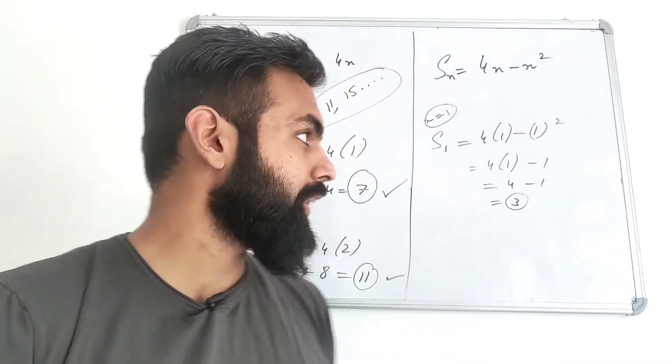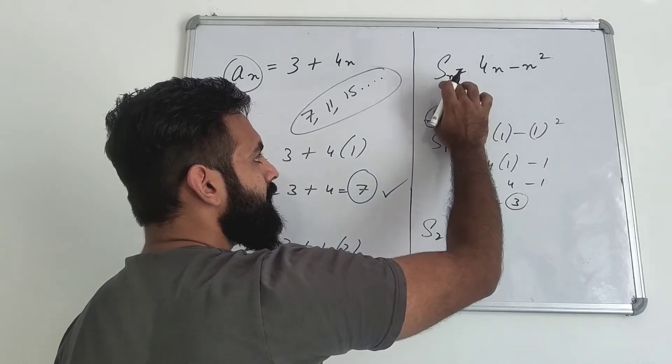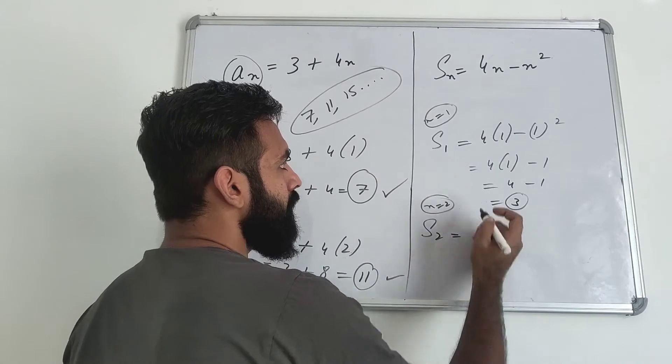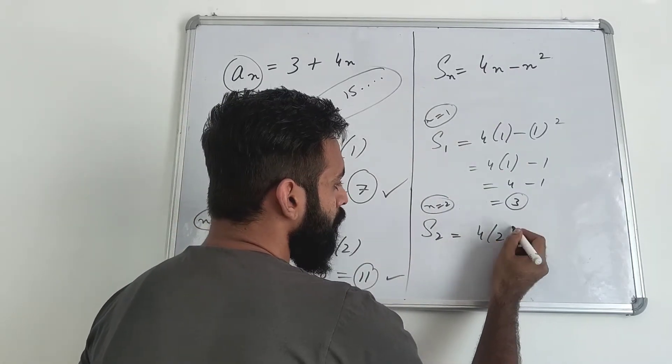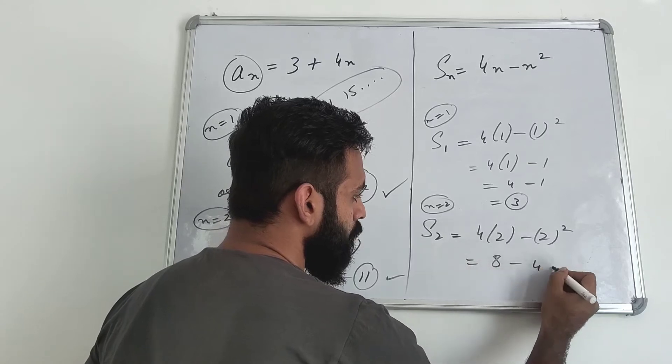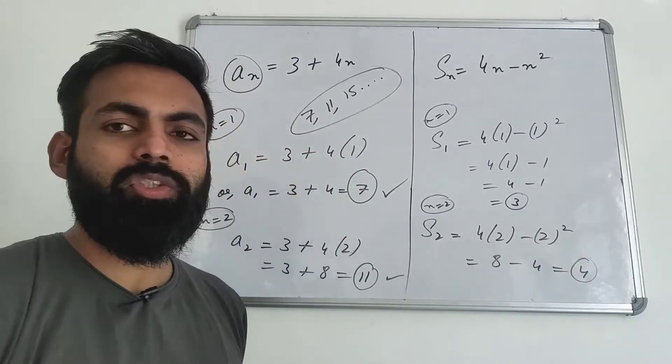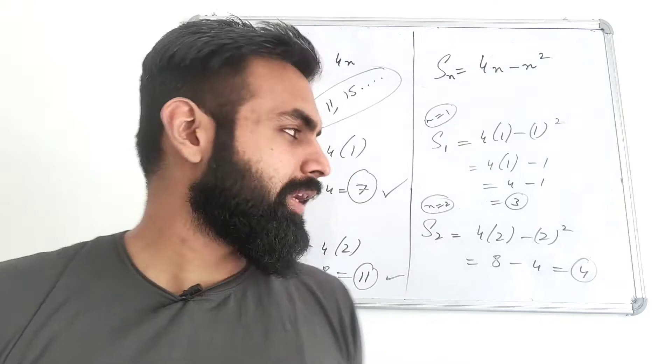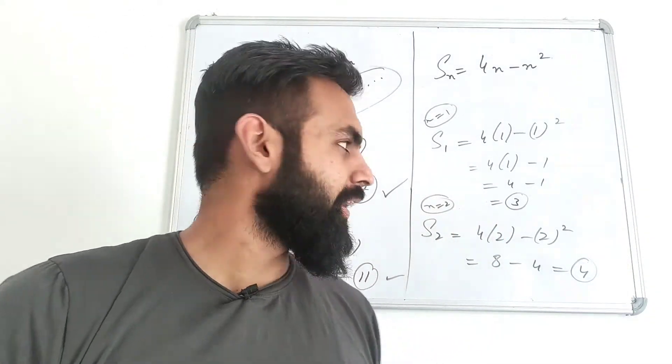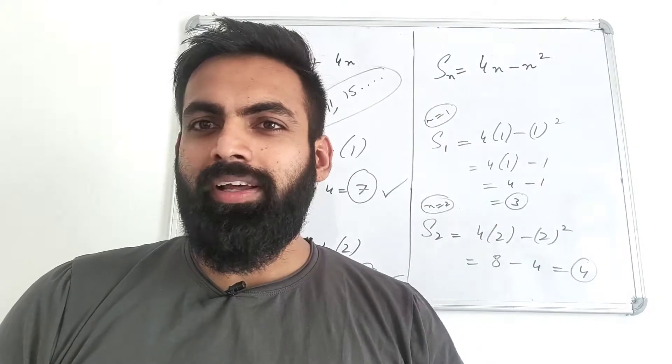S2, I will show you first. S2 equals, n value is 2, so S2 equals 4 into 2 minus 2 squared. This gives me 8 minus 4, so S2 is 4. Can you tell me, you have S1 equals 3 and S2 equals 4. Is this AP 3, 4 and so on? No.